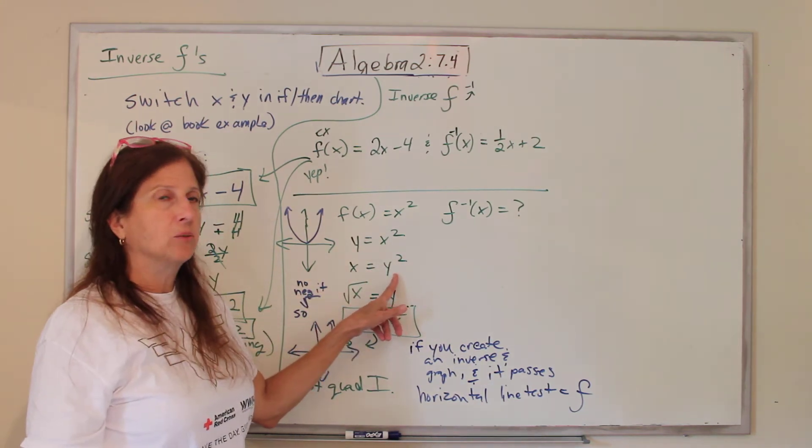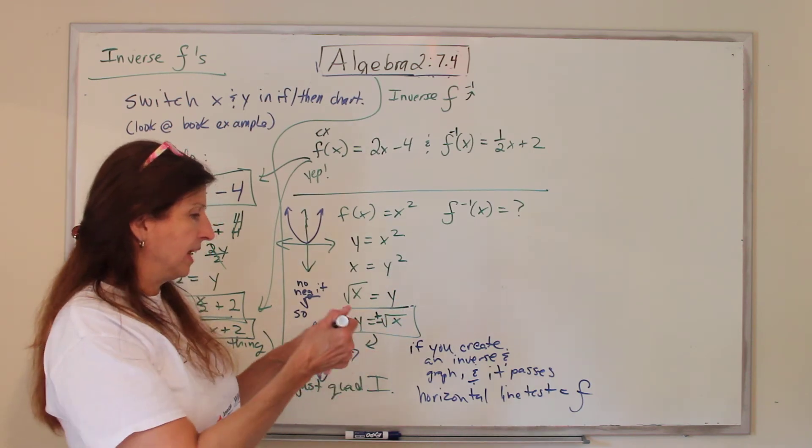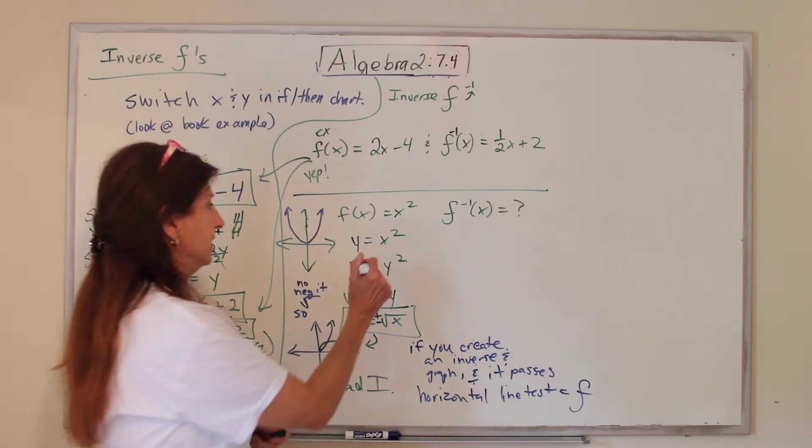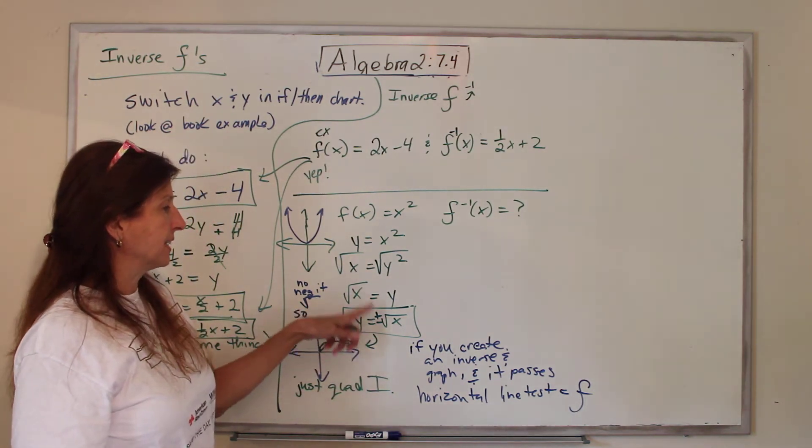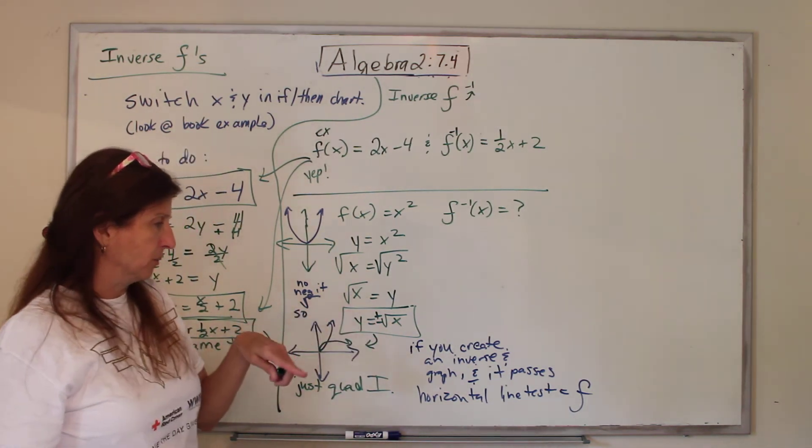And then we're going to say Y is not alone. It's squared. So we have to do the opposite, which is square root both sides. So Y equals the square root of X, except they want us to write plus or minus the square root of X.